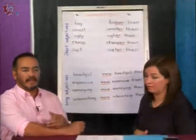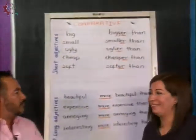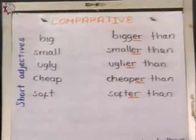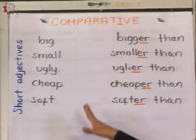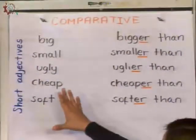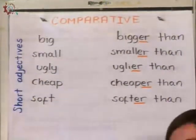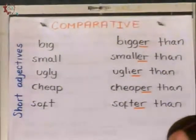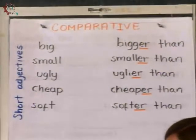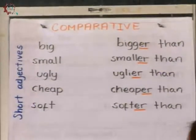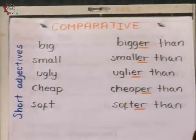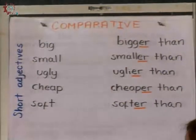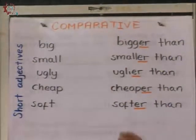No sabría yo por dónde empezar en ese sentido. Tenemos algunas reglas, ¿cierto? Así es. Bueno, aquí tenemos un ejemplo. Short adjectives — son adjetivos de una sola sílaba. Así es, sonido corto. Por el sonido nosotros los podemos identificar bastante bien.